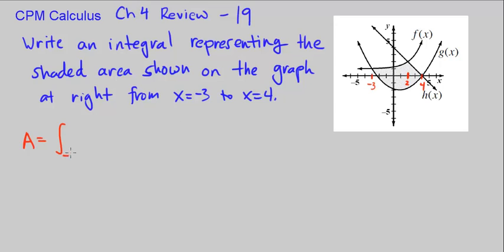We have the integral from negative 3 to 2, and from that region we have the curve f of x above the other curve. So it's going to be f of x minus the one below. The one below is g of x.